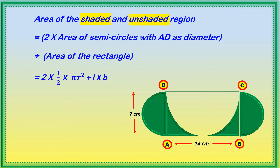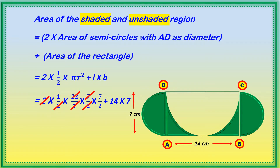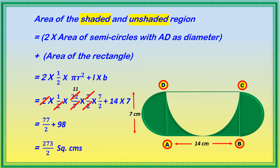So, two into one-half into pi r squared gives the area of the two semicircles, plus area of rectangle equals length into breadth. That is: 2 × (1/2) × (22/7) × (7/2) × (7/2) + 14 × 7. Simplifying: 7 and 7 cancel, 2 and 2 cancel, giving 11 × 7 = 77/2, plus 14 × 7 = 98. Total is 273/2 square centimeters.